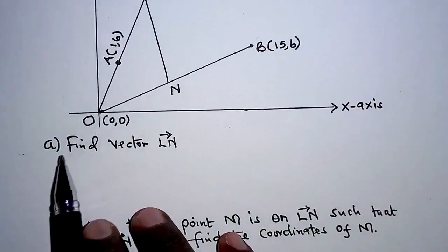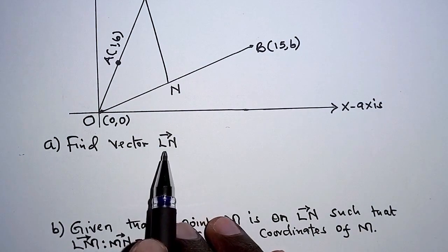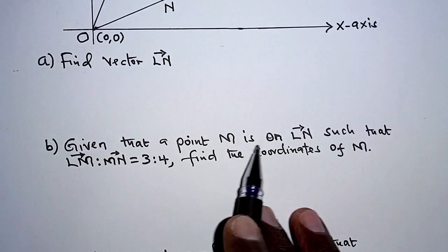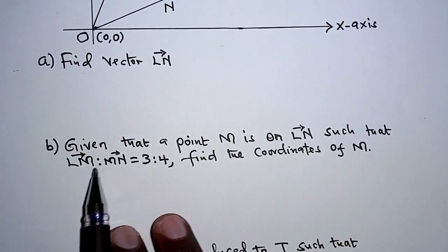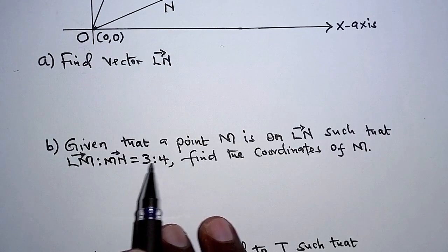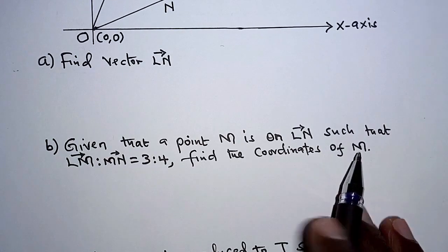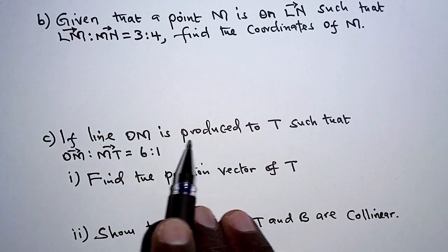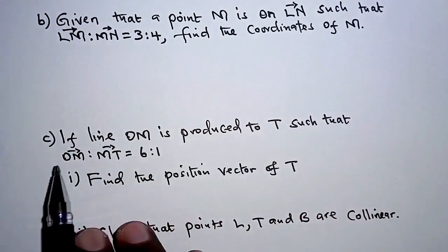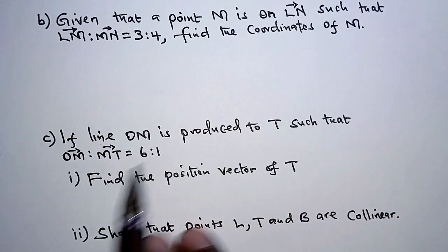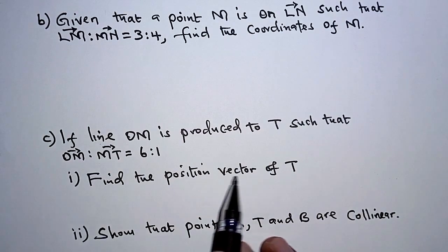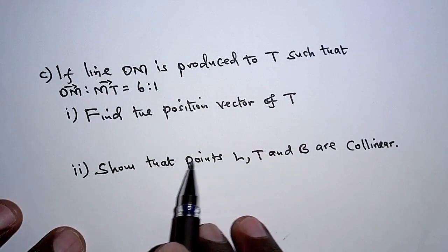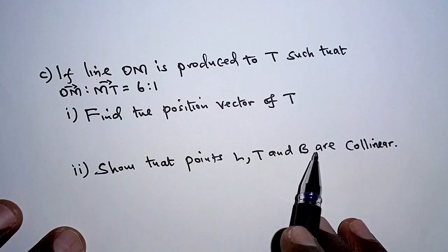For part A, find the vector LN. For part B, given that a point M is on LN such that LM to MN is 3 to 4, find the coordinates of M. For part C, if line OM is produced to T such that OM to MT is 6 to 1: Roman numeral 1, find the position vector of T, and Roman numeral 2, show that points L, T and B are collinear.